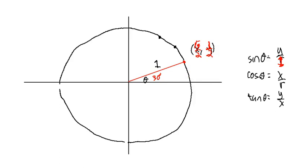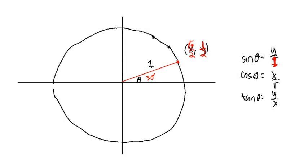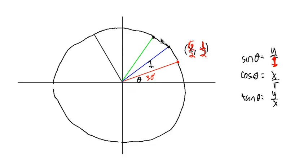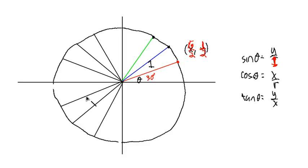We can do this for all of those common angles, and everything just gets plotted on this circle — it's pretty nice and convenient. So here we could do 45 and 60. We can keep going around the circle. We can do the mirror images of these: 120, 135, 150, 180. And we can go 30 degrees down off the horizontal, then 45, then 60 degrees down from the horizontal.